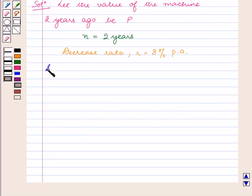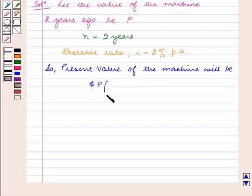So, using the formula, the present value of the machine will be P(1 - 8/100)^2 dollars.